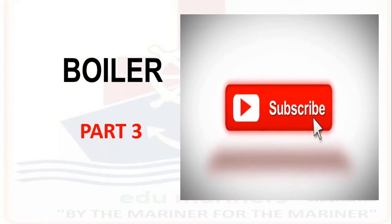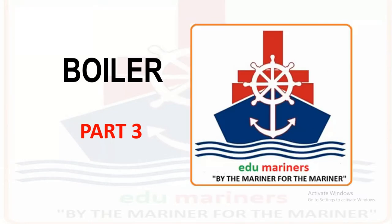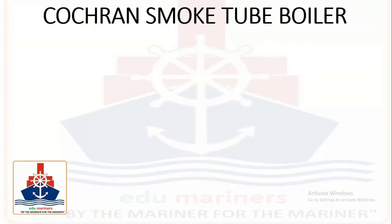Let's start our video with one type of fire tube boiler, i.e. the Cochrane smoke tube boiler. Cochrane is a typical tank boiler of vertical type and it is suitable for producing a relatively small amount of low-pressure steam.